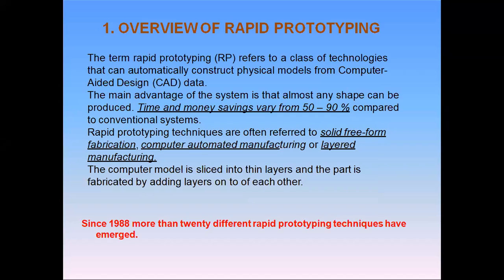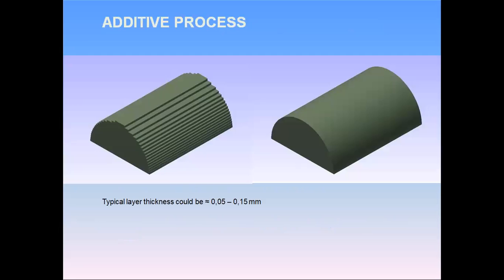Rapid prototyping refers to a class of techniques that can automatically construct physical models from computer-aided data. The main advantage of the system is time and money savings, which can vary from 50 to 90 percent as compared to conventional systems. It is an additive process in which material is added layer by layer to get the finished product.